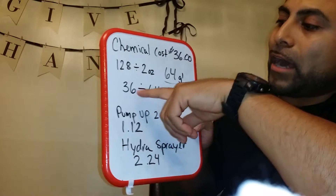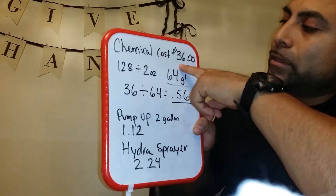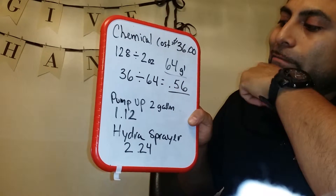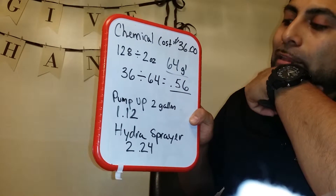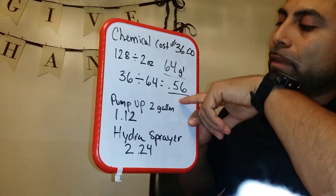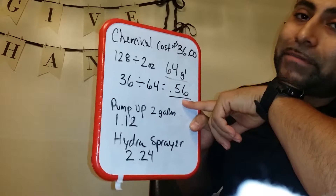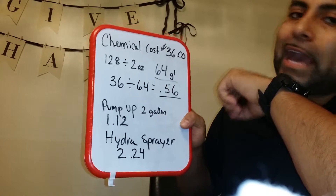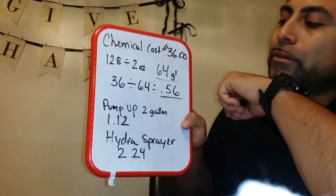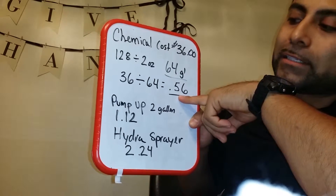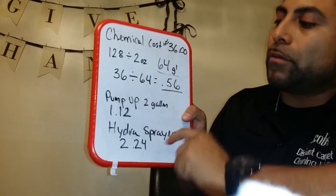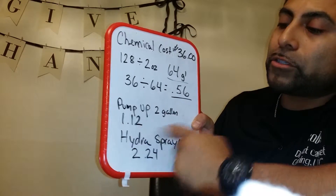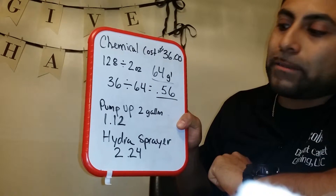Now I take the cost — $36 divided by 64 gallons of diluted chemical — which gives me $0.56. So for every gallon of chemical I use, I'm paying $0.56. So if you have a two-gallon pump-up sprayer, you're spending $1.12 for every two gallons.